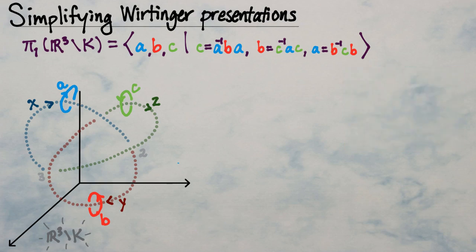For the trefoil group, we notice it's written in terms of three generators and we also have three relations. It's a bit like a system of three linear equations and three unknowns. If we had tools to reduce the number of equations and eliminate a variable, we might better understand the elements that satisfy all three of these relations.